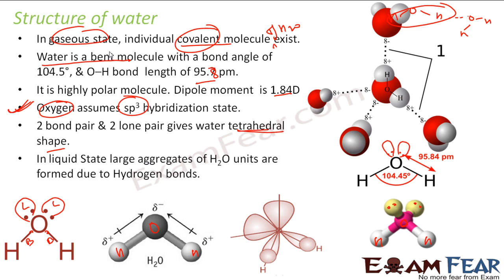In the gaseous state, water exists as individual covalent molecules. In the liquid state, a large number of water molecules are aggregated and linked together by hydrogen bonds. There are n number of covalent molecules all tied up together, forming the liquid structure.